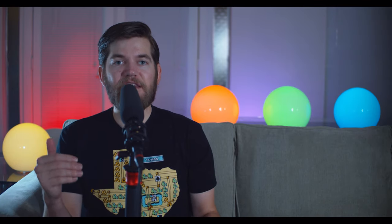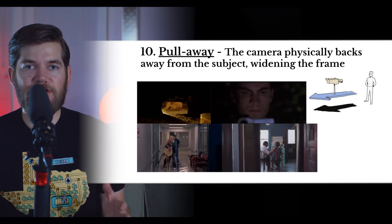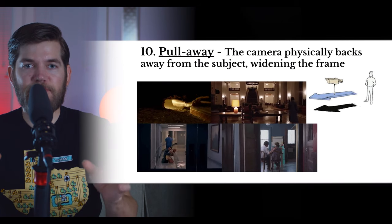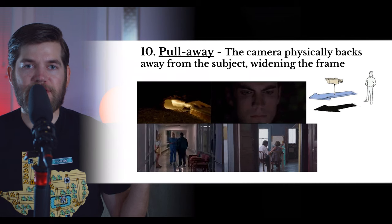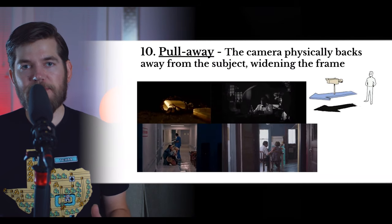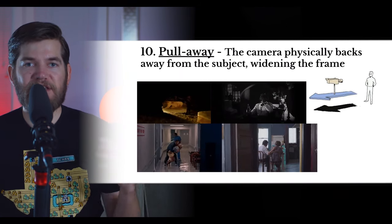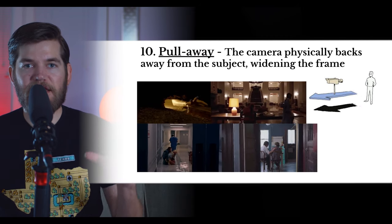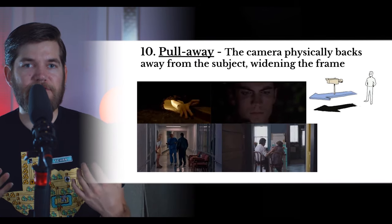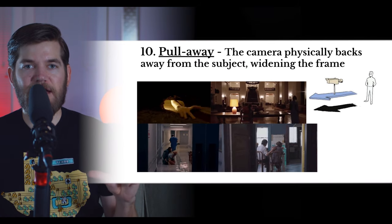Next up we have the pull away, the opposite of the push in. You are pulling away from your subject, moving backwards through a location, revealing more of the location, or widening the frame. You can use a pull away to move from a close-up to a long shot. Camera movement can emphasize emotion — in two examples, characters are mourning the loss of their loved ones. Both directors chose a pull away to emphasize that emotional loss, as if the characters were shrinking and the environment closing in around them as the audience leaves them behind.